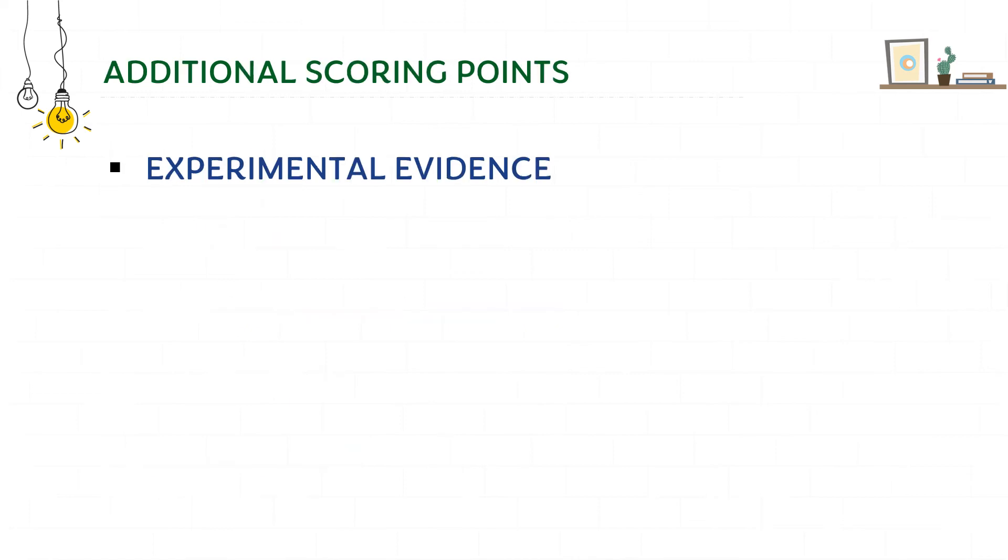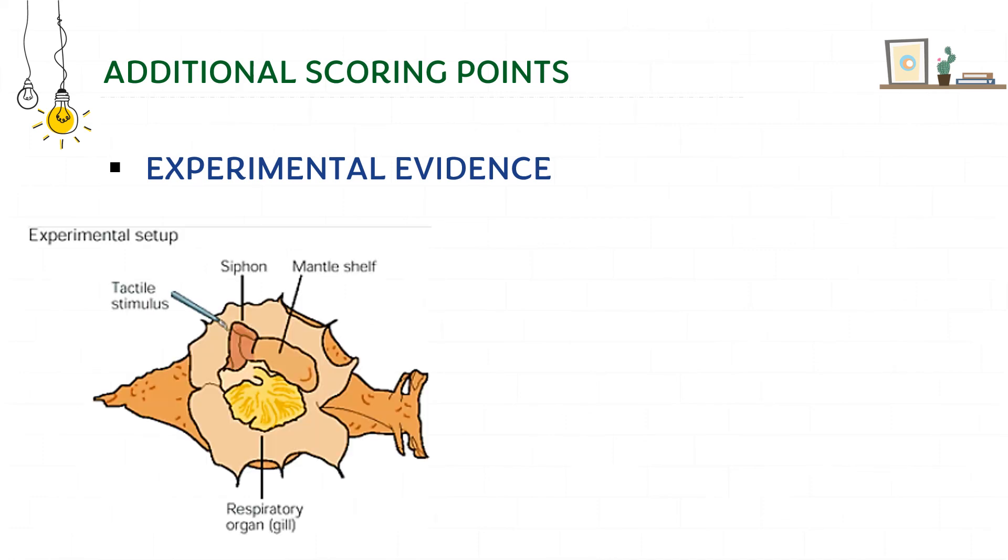Now for some additional scoring points, it will always be better if you write about the experimental evidence or how scientists got to know about these. Initially there was the neurologist called Kandel who did this experiment on Aplysia. This is the snail and this is the siphon of the snail. This is the mantle shelf and this is the gill of the snail.